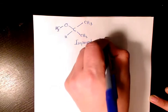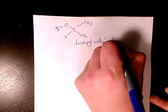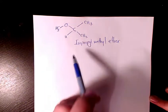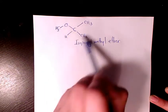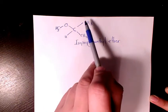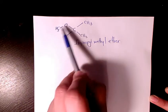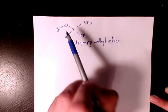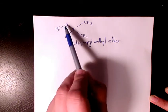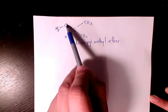Another naming: we take the longest chain, which is one, two, three here, so we are dealing with propane. The smaller one is methyl, and methyl connects to oxygen, so that becomes methoxy. And it connects...